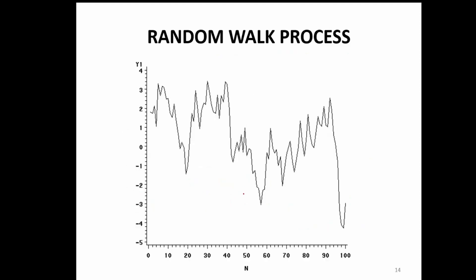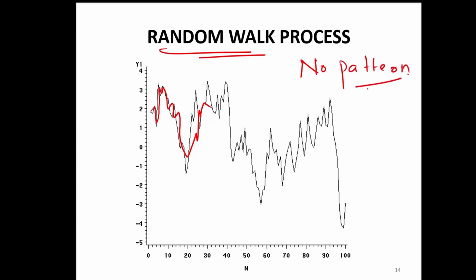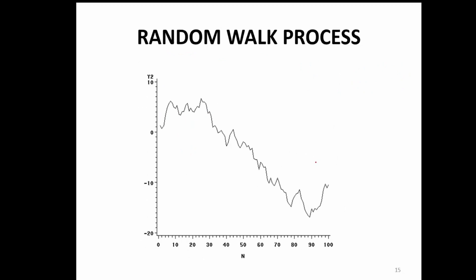If you plot a random walk process, it looks very weird. There is no trend at all, there is no pattern. Basically what random walk means is that there is no pattern in the data — just pure random, and there is nothing in the data that you can use for forecasting your future. This is also a typical random walk process.